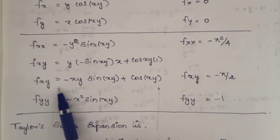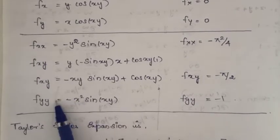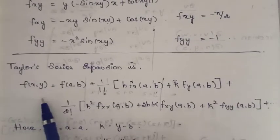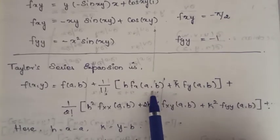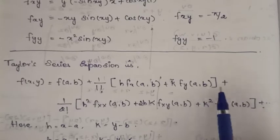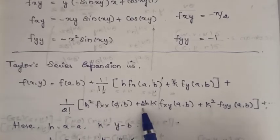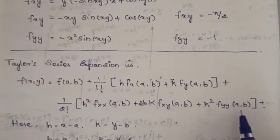Now substitute all values into the Taylor series formula. The Taylor series expansion is: f(x,y) = f(a,b) + (1/1!)·[h·fx(a,b) + k·fy(a,b)] + (1/2!)·[h²·fxx(a,b) + 2hk·fxy(a,b) + k²·fyy(a,b)] + higher order terms, where h = x minus a and k = y minus b.